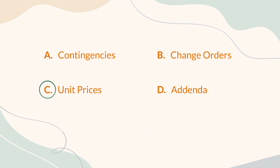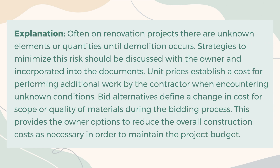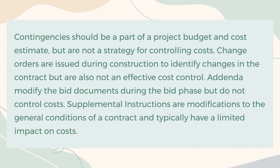The correct answer is C. Unit prices. Explanation: Often on renovation projects there are unknown elements or quantities until demolition occurs. Strategies to minimize this risk should be discussed with the owner and incorporated into the documents. Unit prices establish a cost for performing additional work by the contractor when encountering unknown conditions. Bid alternatives define a change in cost for scope or quality of materials during the bidding process, providing the owner options to reduce overall construction costs. Contingencies should be part of a project budget but are not a strategy for controlling costs. Change orders are issued during construction but are also not an effective cost control. Addenda modify the bid documents during the bid phase but do not control costs.